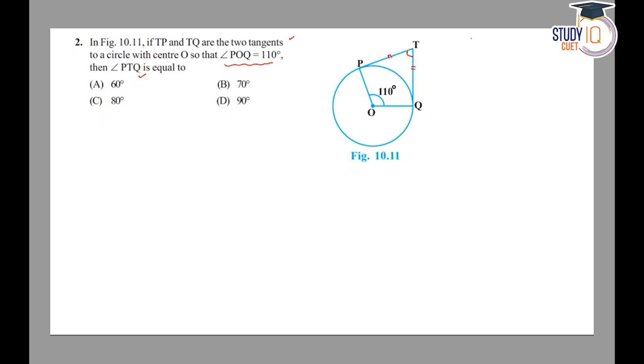You can see that if we have some point that is external to a circle, then two tangents are equal. And you can see this quadrilateral PTQO. This is a cyclic quadrilateral.